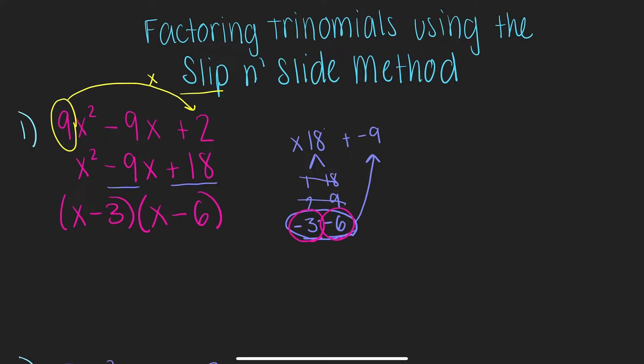So, now that we factored that trinomial, we are going to not forget about this 9 that we slid back. You are going to take that 9 and divide both of those last numbers by 9.